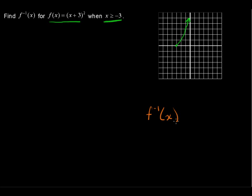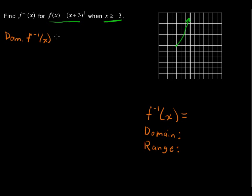When finding the inverse function, I like to lay down what we're usually asked for: the inverse function, the domain, and the range. The domain of the inverse function equals the range of the original function. And the range of the original is just everything greater than or equal to 0 — all y greater than or equal to 0. That's the range of the original function.